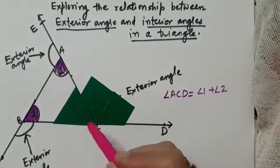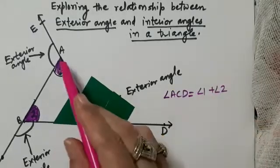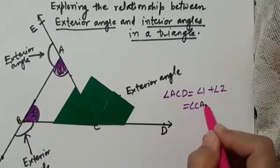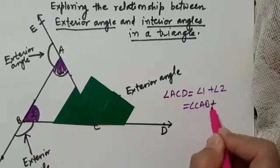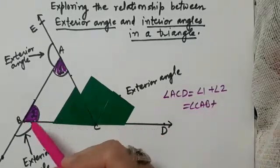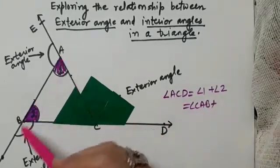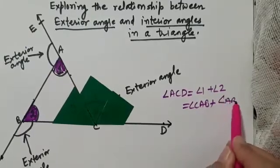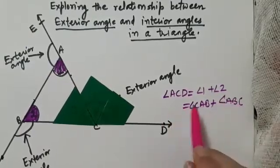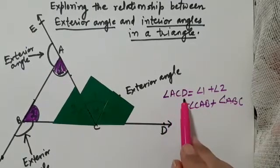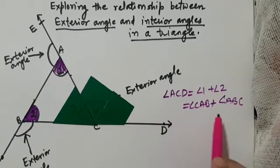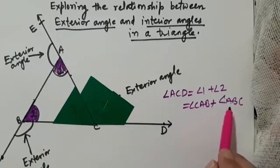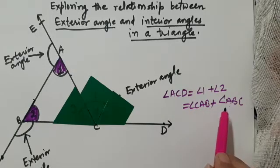We observe that angle ACD is equal to angle 1 plus angle 2, that is, angle CAB plus angle ABC. So we observe that the exterior angle is equal to the sum of the interior opposite angles.